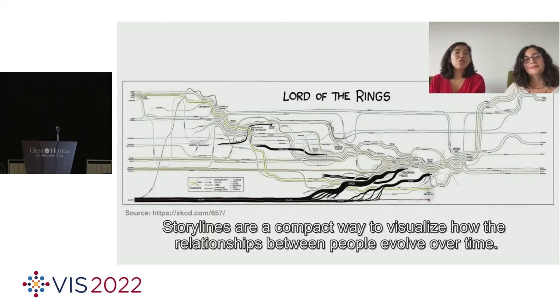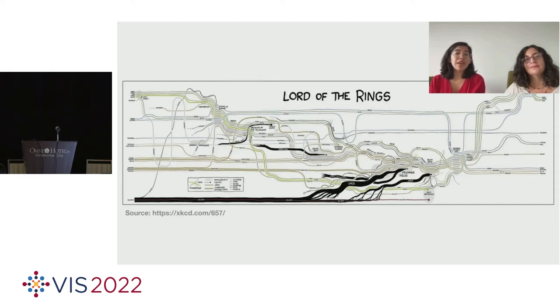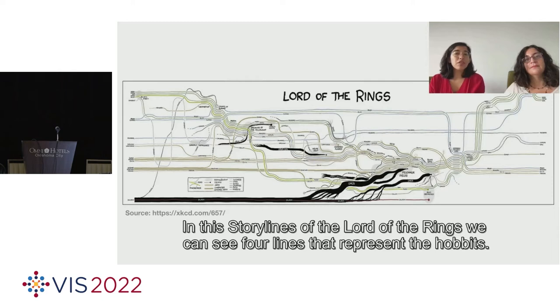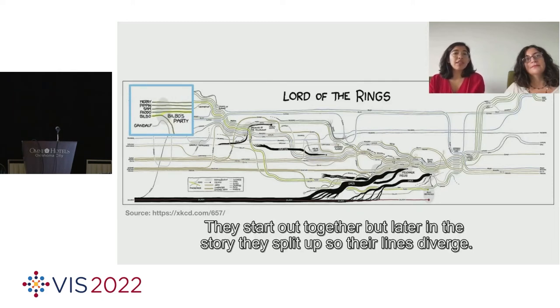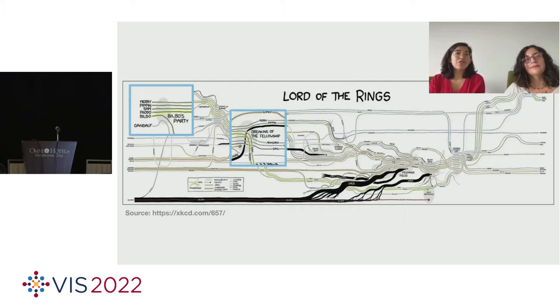Storylines are a compact way to visualize how the relationships between people evolve over time. In these storylines of the Lord of the Rings, we can see four lines that represent the Hobbits. They start out together, but later in the story, they split up, so their lines diverge.